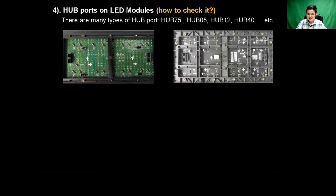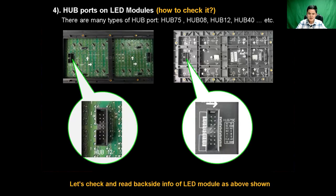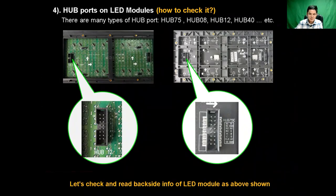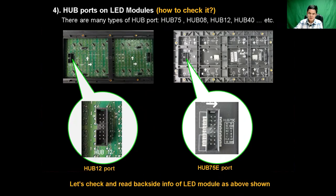So how can we check the hub port type of an LED module? Actually we just need to check and read the backside information of the LED module. As shown, you can see the backside of the LED module. The left module has 'HUB12' printed on it, so it is a HUB12 port. And the right side reads 'HUB75E,' so its hub type is HUB75E. If there is no printed information on the backside of the LED module, you have to ask your module supplier.